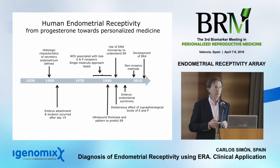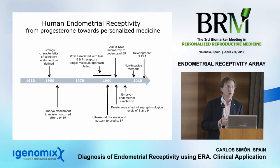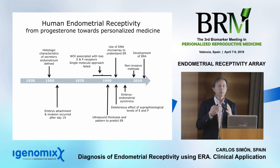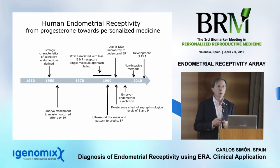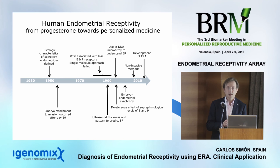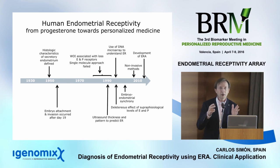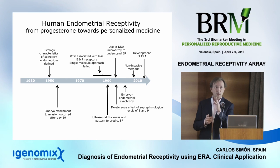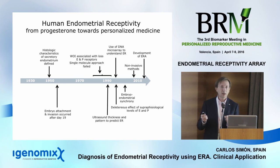The first piece of information we can find is the classical criteria from Noyes, which are more than 50 years old. They used histology to define what the luteal phase looked like day by day — this is the most cited paper in OB/GYN to this day. But this is anatomical medicine; this was the beginning, trying to characterize the luteal phase endometrium, which is different from a receptive endometrium.